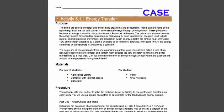Through Activity 5.1.1 Energy Transfer, you will determine the sequence of energy flow of a group of organisms and sketch the food web in order to understand how energy and nutrients flow through trophic levels within an ecosystem. Your teacher will share instructions for you and your partner before the activity.